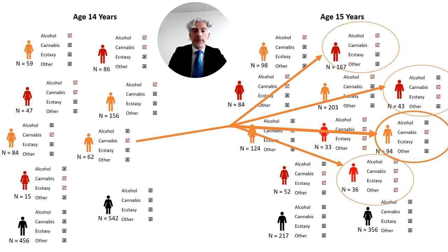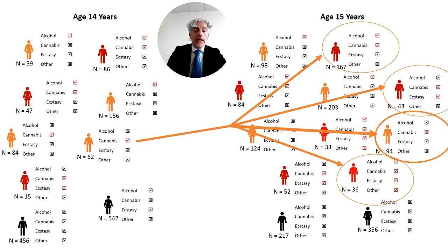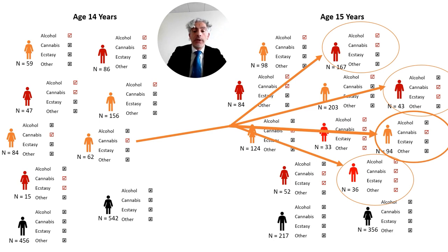Furthermore, when we are interested in classifying individuals into different groups based on patterns of substance use, we are also often interested in investigating whether individuals change or not, and if they change, what are the patterns of change. For example, based on the gateway theory, I might be interested in investigating whether individuals that use cannabis at 14 years of age move into categories of use that involve other substances as well. If the categories we identified are based on arbitrary rules, we are often not able to provide reliable descriptions of change across time. So latent transition analysis is a statistical method that, based on probability rules, allows to answer these questions.